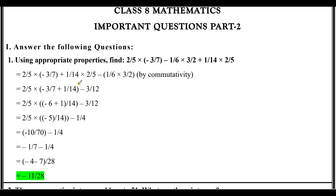Starting from the first question: using appropriate properties, find the value of (2/5) × (-3/7) - (1/6) × (3/2) + (1/4) × (2/5). First, I'll rearrange the terms. There are three terms. In the first and third terms, we have a common factor of 2/5, so it will be easy to simplify. Rearranging: (2/5) × (-3/7) + (1/4) × (2/5) - (1/6) × (3/2).